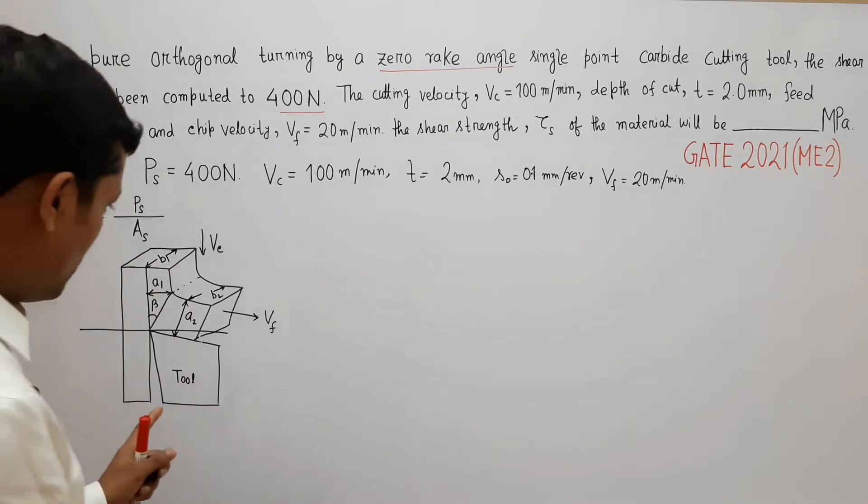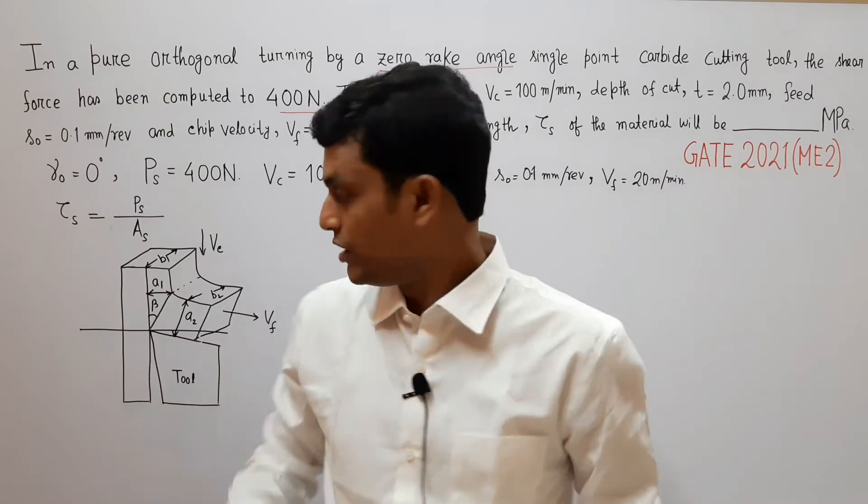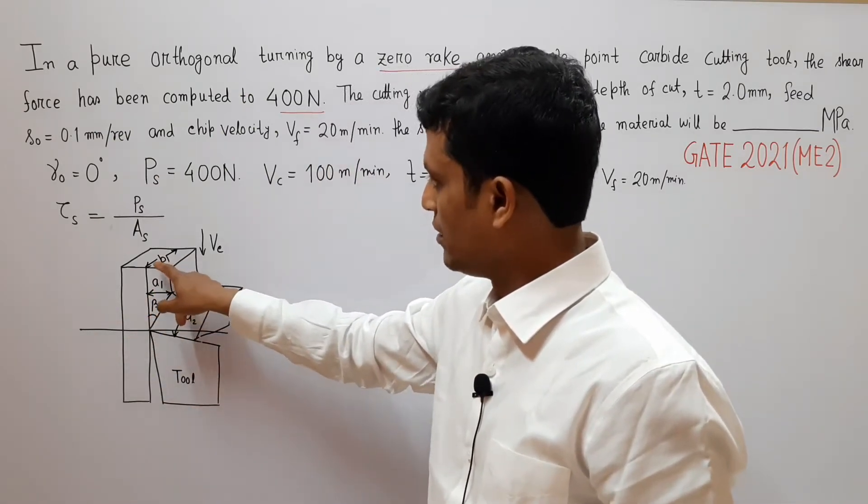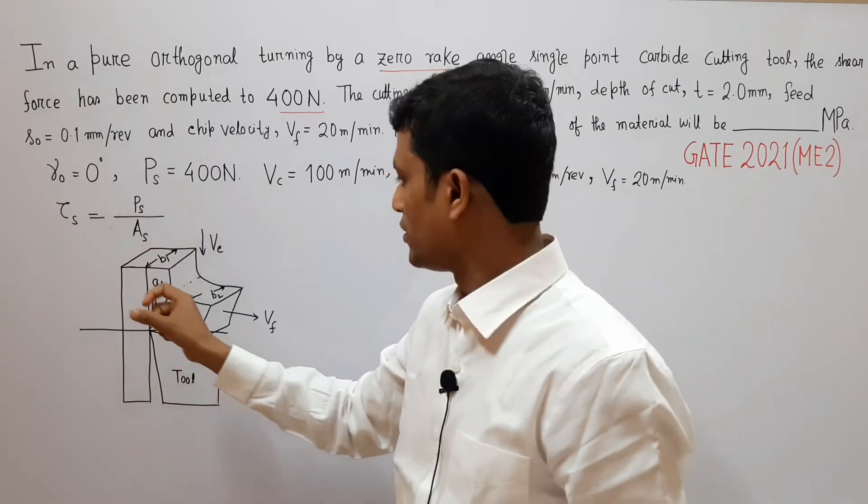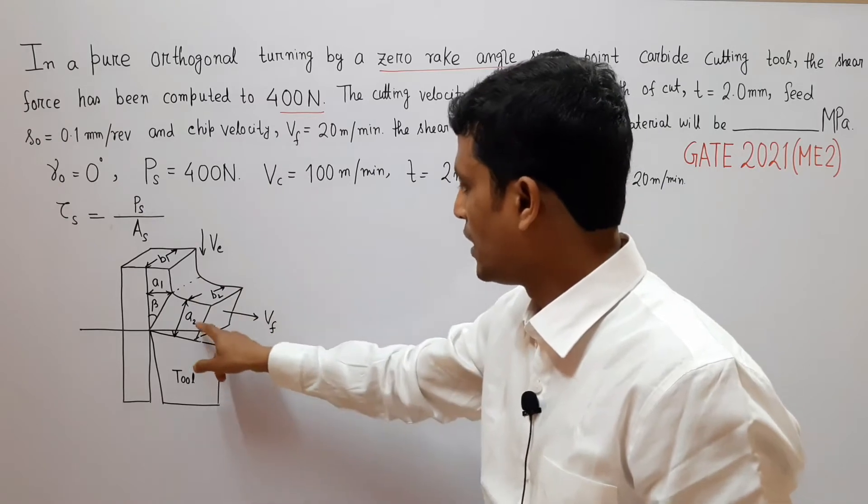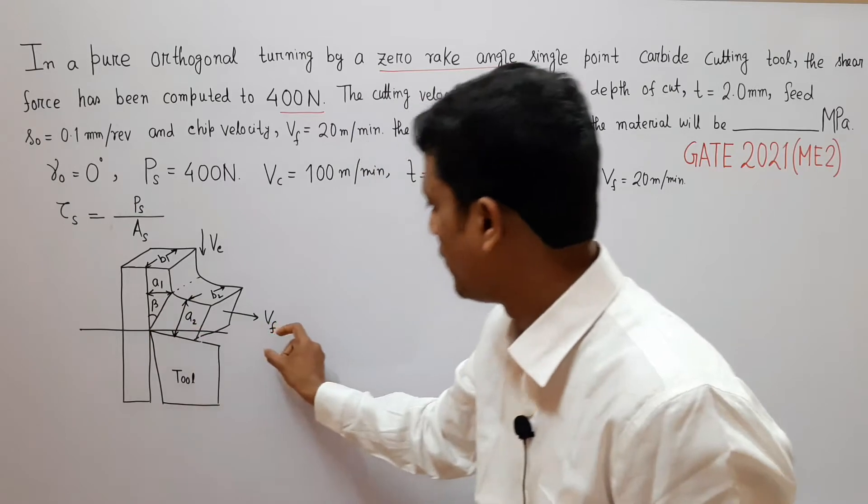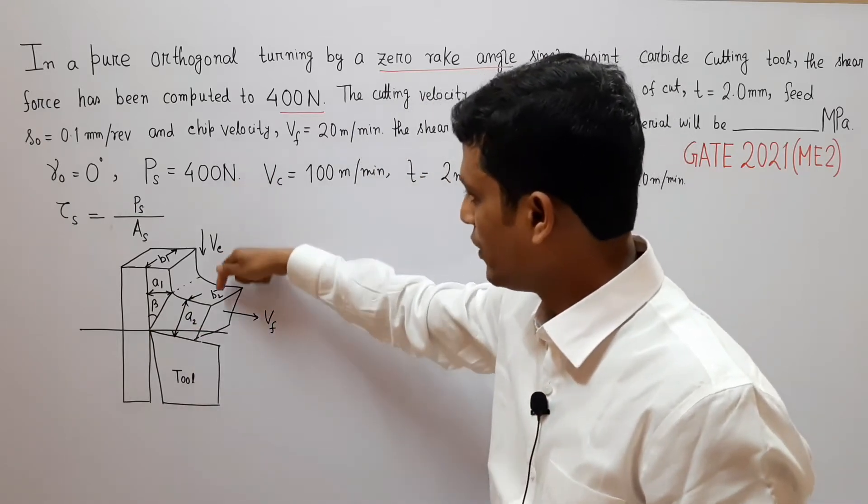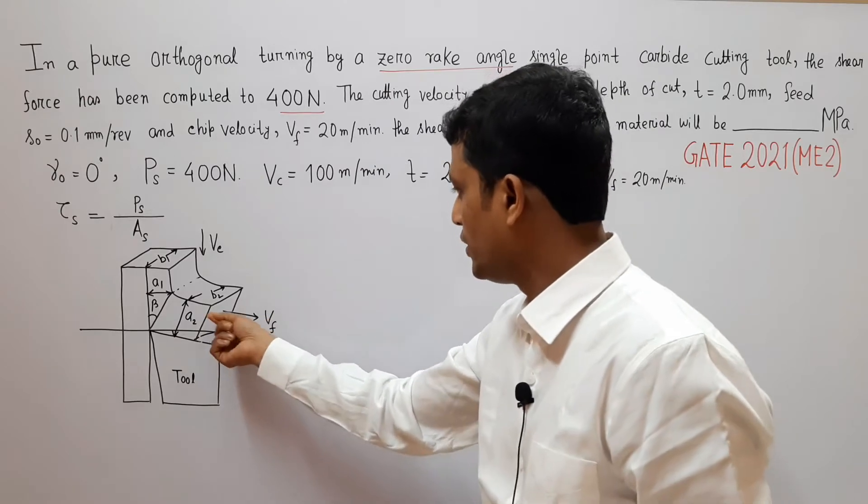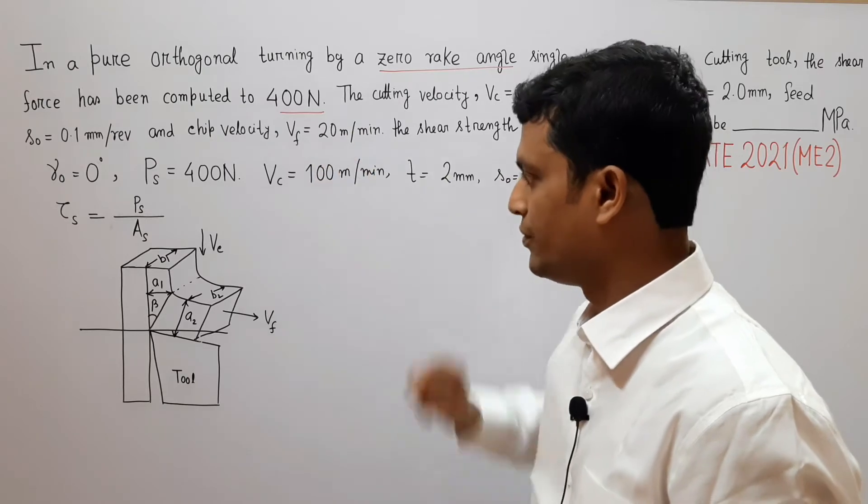This is my tool. This is the shear angle. A1 is uncut chip thickness and this is A2 that is chip thickness. This is B1 width of uncut chip and this is B2 that is width of chip. Vc is in this direction and this is Vf.